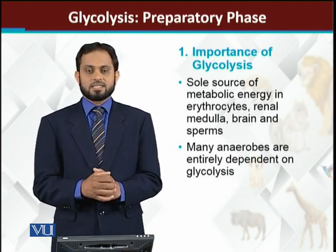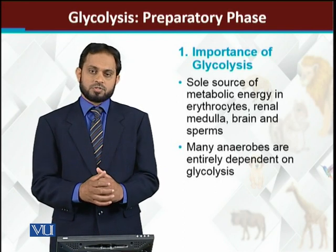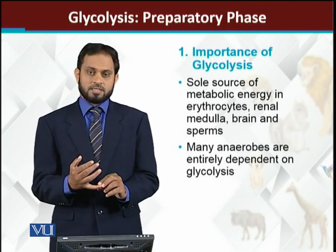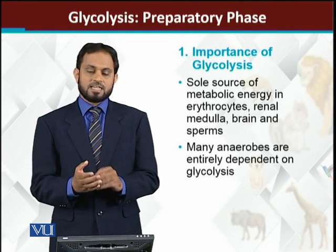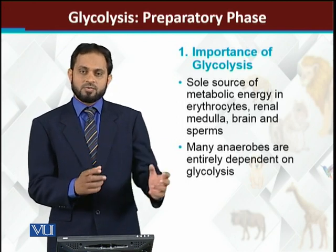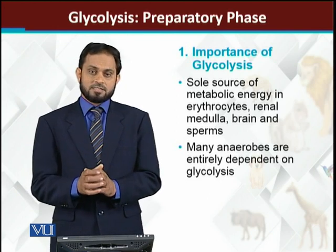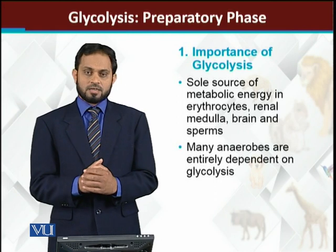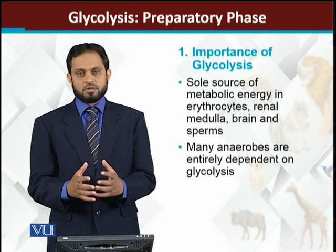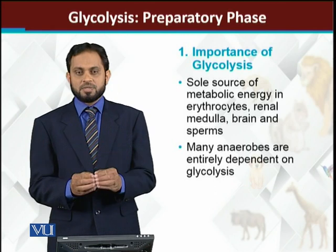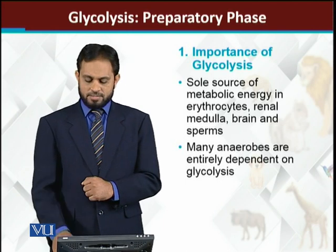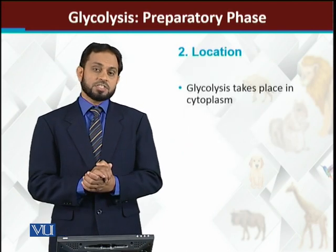Similarly, the sperm cells also utilize glucose as an energy source۔ تو یہ چار types — red blood cells (erythrocytes)، renal medulla cells، brain cells، اور sperms — all these cells survive only with the glycolysis process۔ ان سارے کی energy through glycolysis آتی ہے۔ Similarly، many anaerobes جو oxygen کے environment میں نہیں رہتے، they are also obtaining their energy by the glycolysis process — ان کے لئے the sole method of respiration glycolysis ہوگا۔